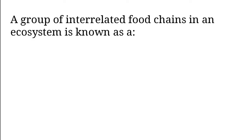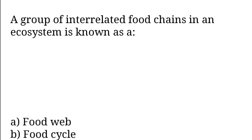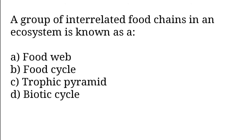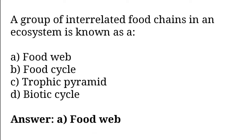A group of interrelated food chains in an ecosystem is known as: food web, food cycle, trophic arrangement, biotic cycle. So the correct answer is option A. A group of interrelated food chains in an ecosystem is known as a food web.